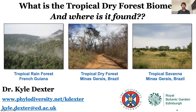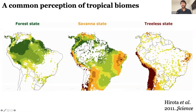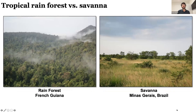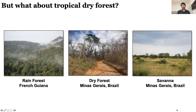My job here is to talk about tropical dry forests. I'm going to start with what I think is a common perception of the major biomes in the tropics — the common simplification into forest, savannah, and treeless, with treeless being deserts and grasslands. This talk is mostly going to focus on wooded ecosystems: forest and savannah. I would argue that this simplification of just forest and just savannah is perhaps too simple, because when people talk about forests, they're almost always talking about rainforests. I want to try and insert dry forests a bit more into the discussion.